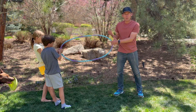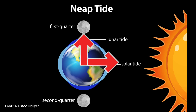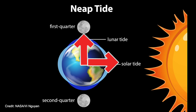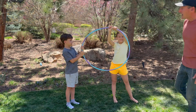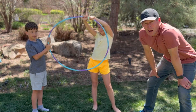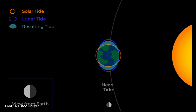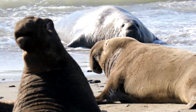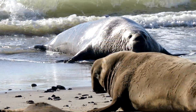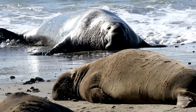But what about during a first and third quarter moon phase? At these times, the moon's gravity is pulling perpendicular to the sun's. Neap tides are, for lack of a better word, boring. The tides don't change much over the course of a day, which is great if you just want to hang out at the beach and not really do much of anything.